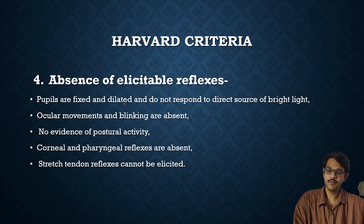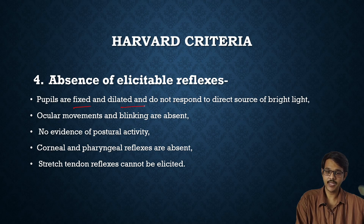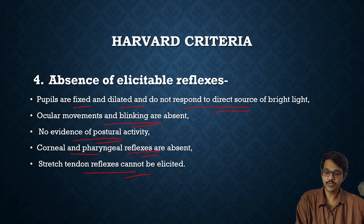The next point is absence of elicited reflexes. Reflexes are tested to know whether they are present or absent. First is the pupil reflex — when light is shone on the pupils, they are fixed and dilated and do not respond to a direct bright light source. Eye blinking is absent when the corneal reflex is elicited. Vestibular reflex is absent. Corneal and pharyngeal reflexes are absent. Stretch tendon reflexes — such as knee jerk, biceps jerk, or triceps jerk — cannot be elicited.